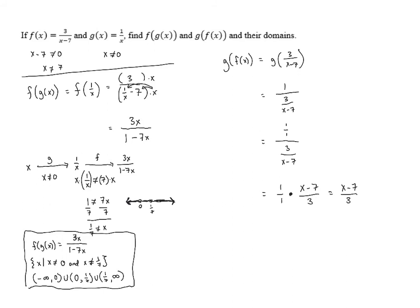Now we have to look at the domain to make sure everything works out. In this problem we start with x and input it into f, which outputs 3 over x minus 7. We know for f as a function we're not allowed to have 7 as an input. So if x is the input, that tells us x is not allowed to be 7, and 7 is not going to be in the domain.